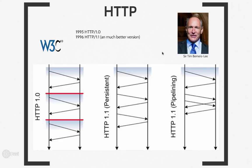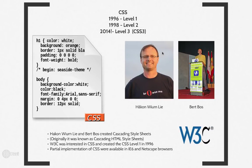Meanwhile, at W3C, they were standardizing HTTP — they came out with HTTP 1.0 in 1995 and HTTP 1.1 in 1996. Around the same time, there were requests to the computer science community to create a way to easily style HTML. Two gentlemen came up with CSS — Cascading Style Sheets. The idea was that you could style a parent element and the style would cascade down to child and grandchild elements. W3C standardized it, releasing CSS Level 1 in 1996 and CSS Level 2 in 1998.